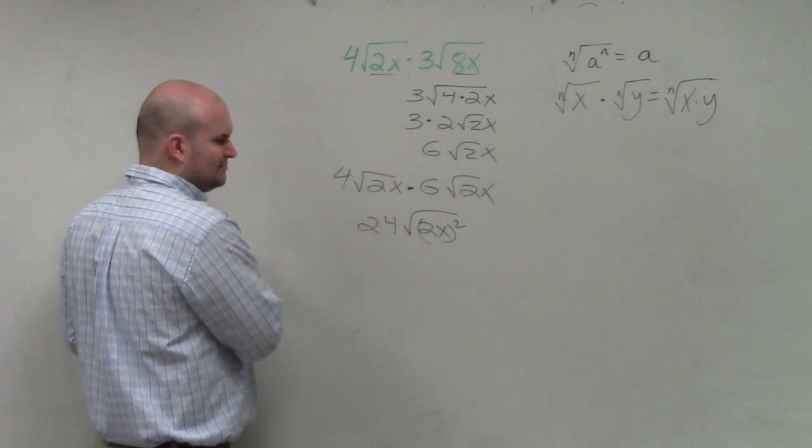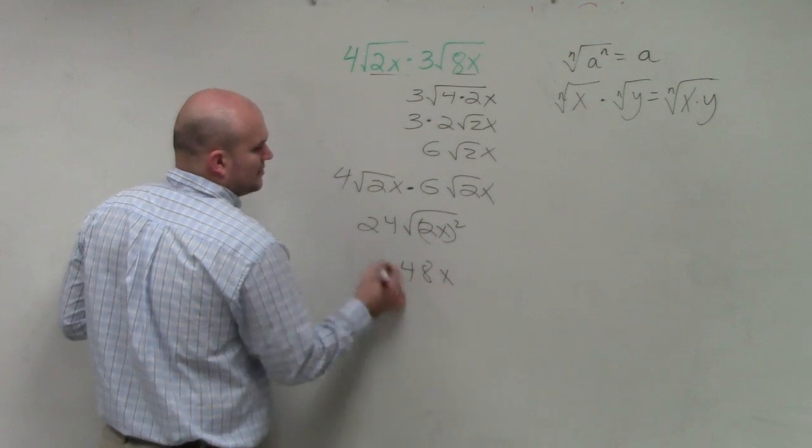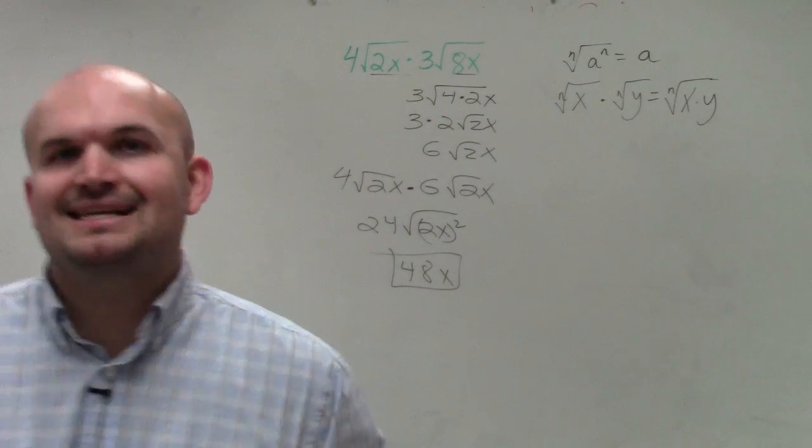And what's the square root of 2x squared? 2x. 2x times 24 is? 4x. There you go. Done, son.